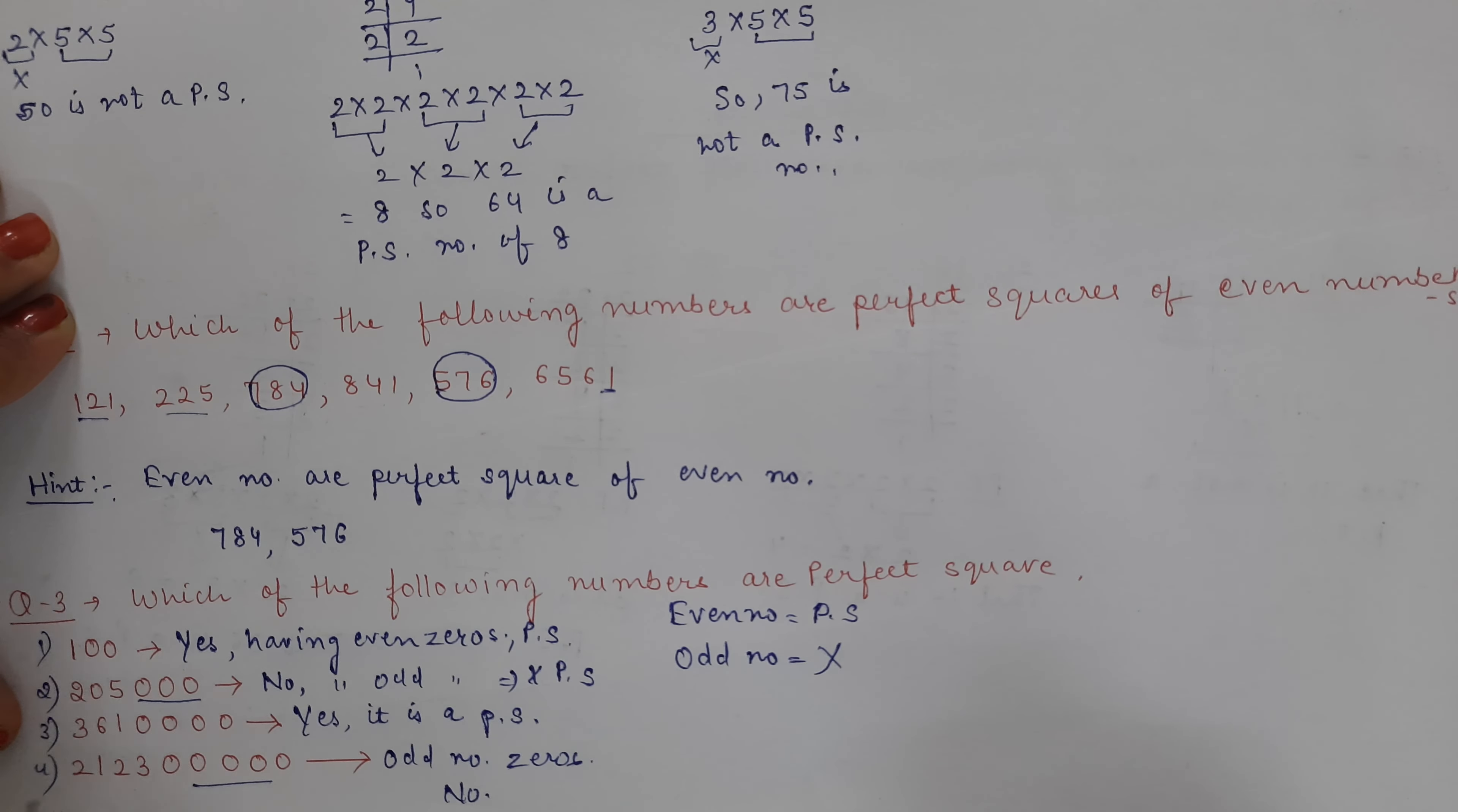So you can count the zeros. If there are an even number of zeros, it's a perfect square. If there are an odd number of zeros, then it's not a perfect square.